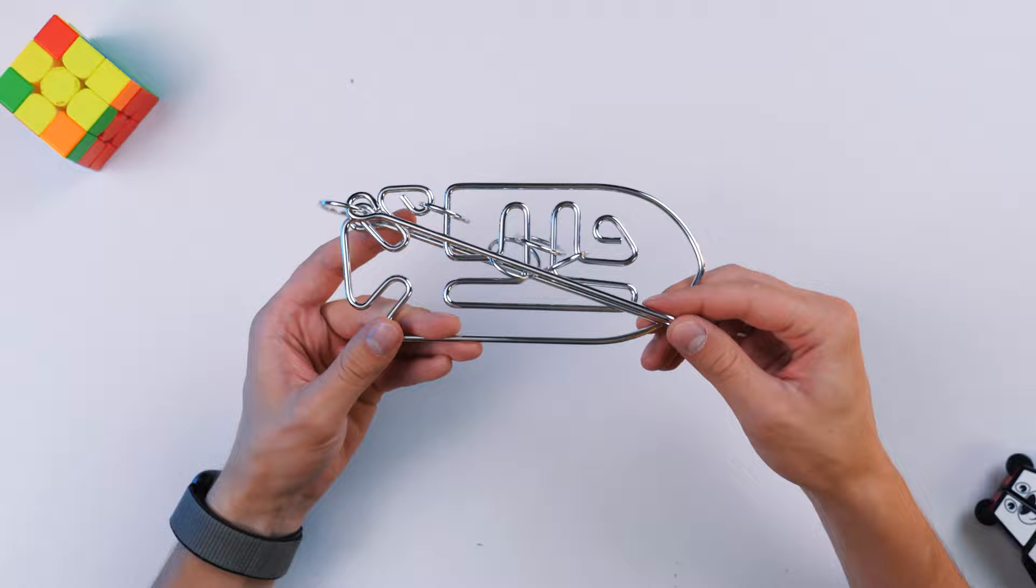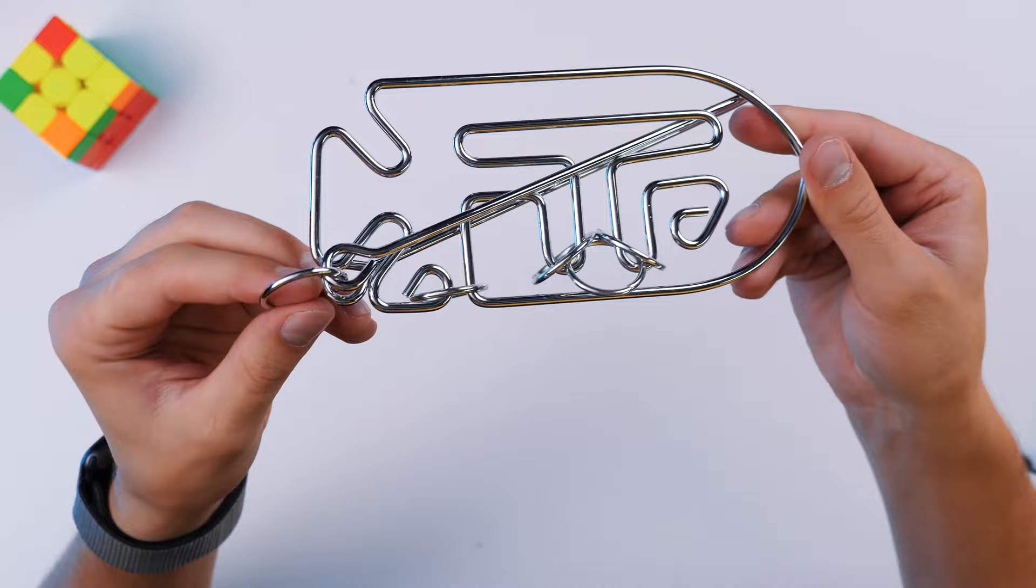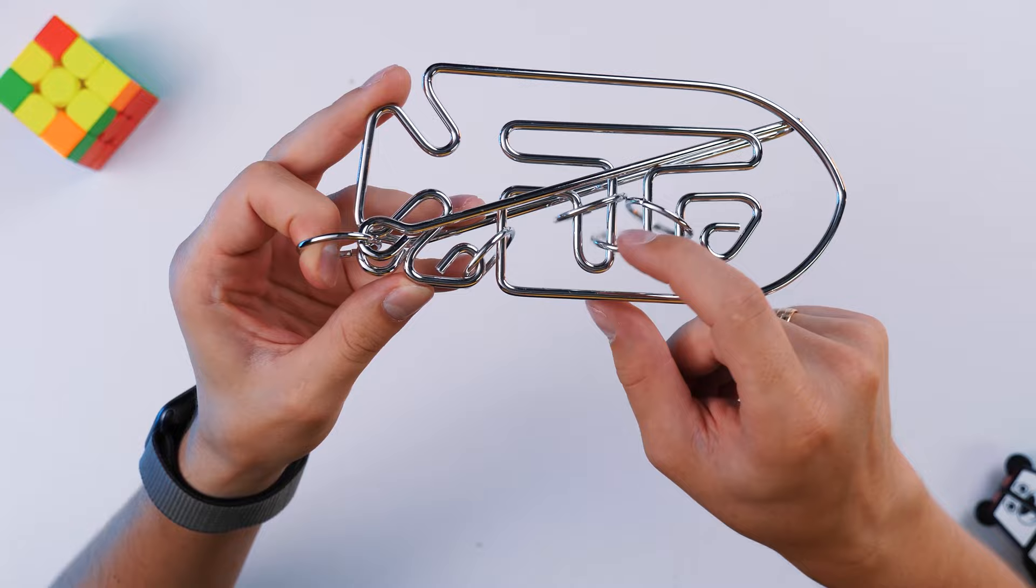First of all, I have to understand how it all works here. It really looks like a fish. We have one, two, three, four, five rings.